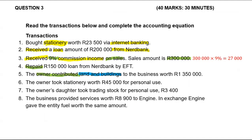Transaction six: the owner took stationery worth 45,000. We know that stationery is affected. But we want to know why did the owner take stationery — it is for personal use. When the owner takes anything from the business for personal use, which account is that? It takes you back to the definitions explained when we started accounting. These are the real definitions that will always come out — whether you're doing accounting grade 10 or at varsity, they will always come out.